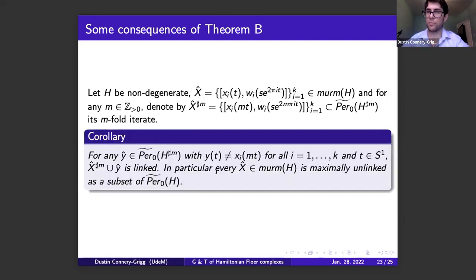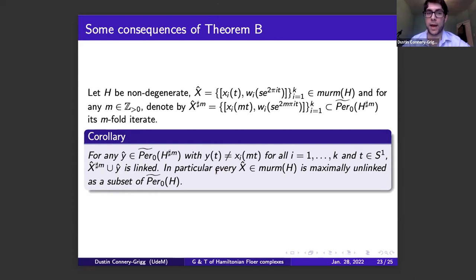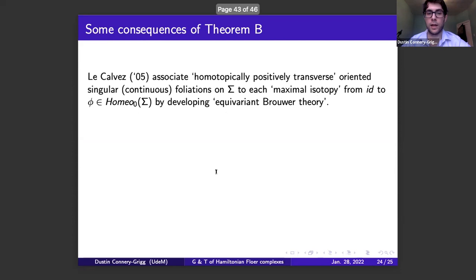One consequence is that every MERM braid is necessarily maximally unlinked. A priori it didn't have to be: there could be capped orbits outside the Morse range that are unlinked with it. But this geometric picture forces any MERM braid to be maximally unlinked.